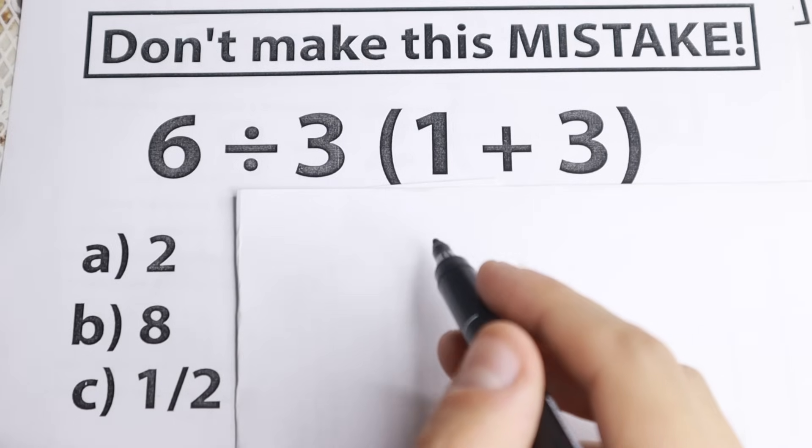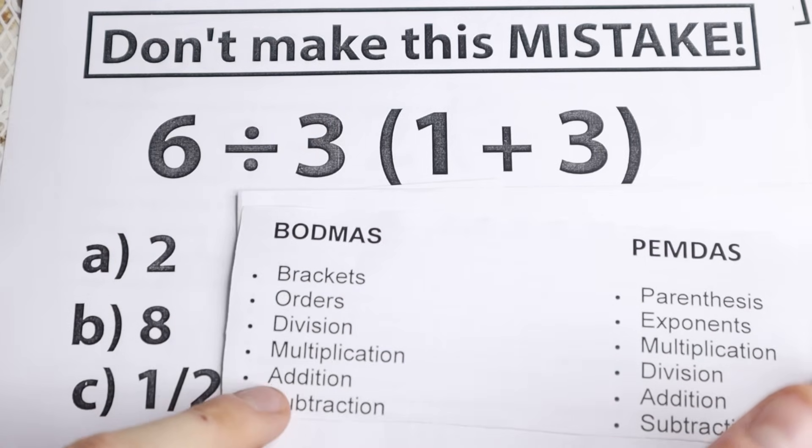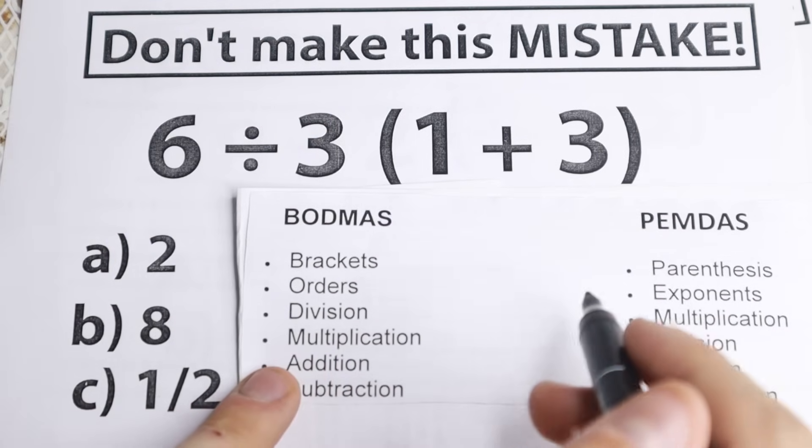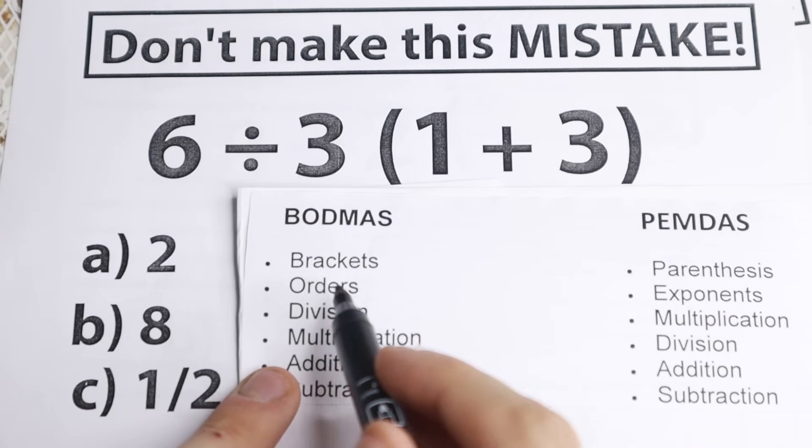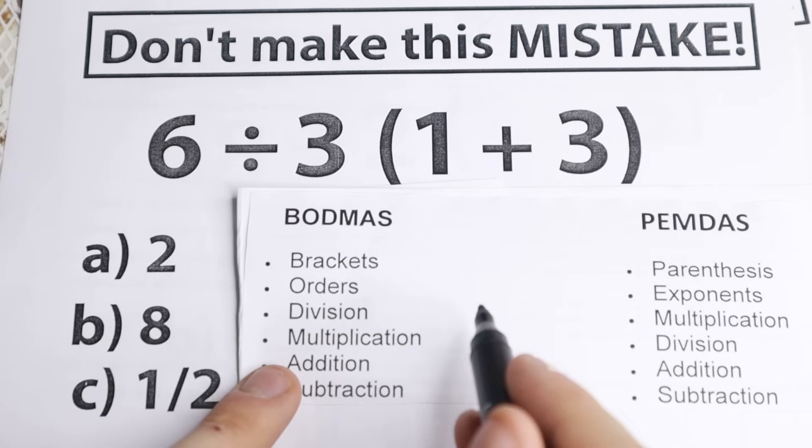The expression can be simplified by the order of operations, often remembered by the acronyms PEMDAS or BODMAS. I have this order right here, so let's look at it. First, we need to evaluate brackets and parentheses. In both cases, we need to evaluate parentheses and brackets.